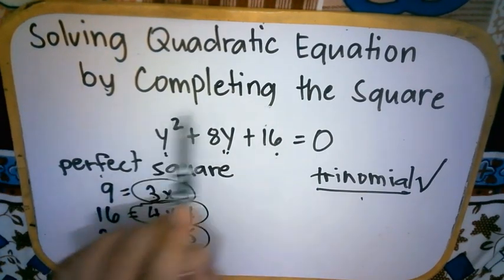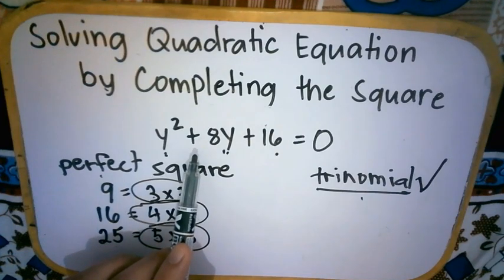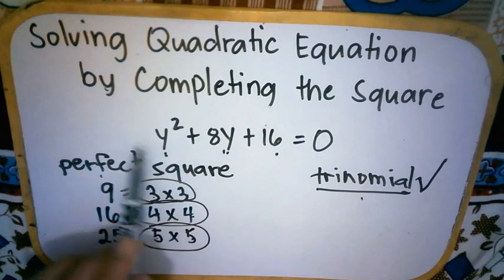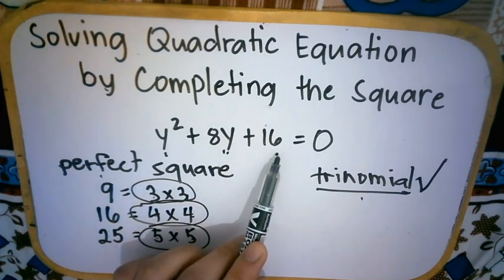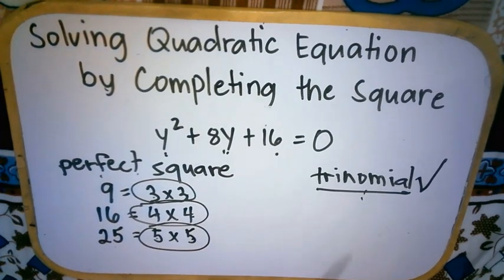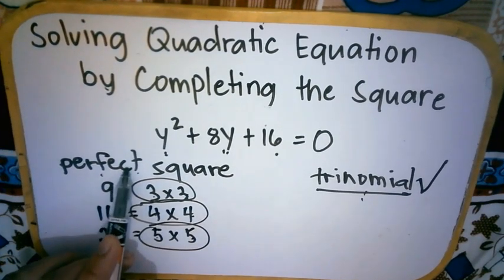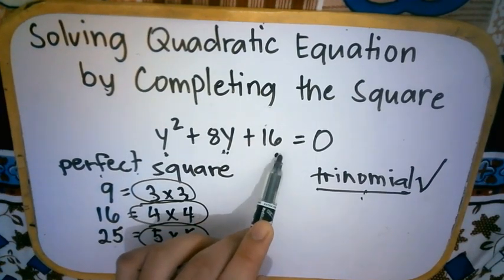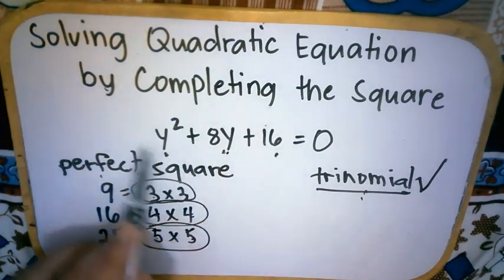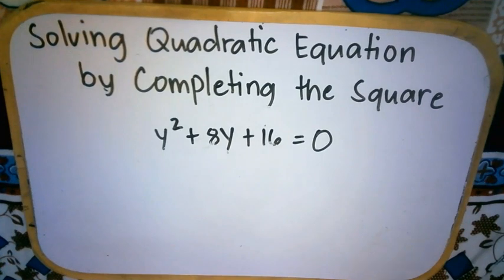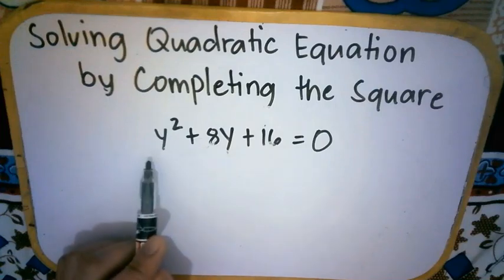Ito ay trinomial na kung saan ang factor ay pareho. So, itong quadratic equation na ito, y squared plus 8y plus 16 is one of the examples of a perfect square trinomial. Ulitin natin, when we say perfect square trinomial, it is a trinomial wherein ang kanyang factor ay pareho.